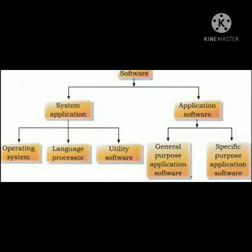First is system software, second is application software. System software is divided into three parts: first is operating system, second is language processor, third is utility software. Application software is divided into two parts: first is general purpose application software, second is specific purpose application software.